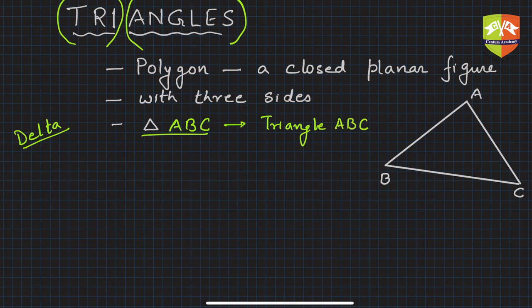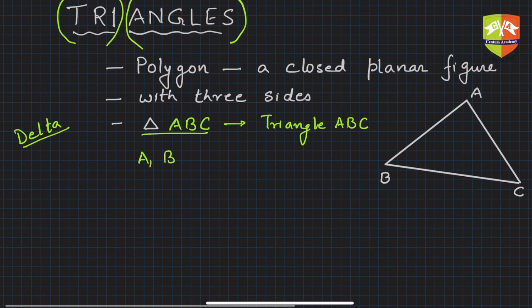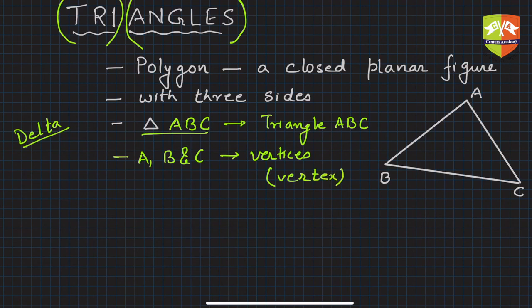A, B, and C are called vertices. Vertices is plural of vertex. Then AB, BC, and CA are sides or edges of triangle ABC.